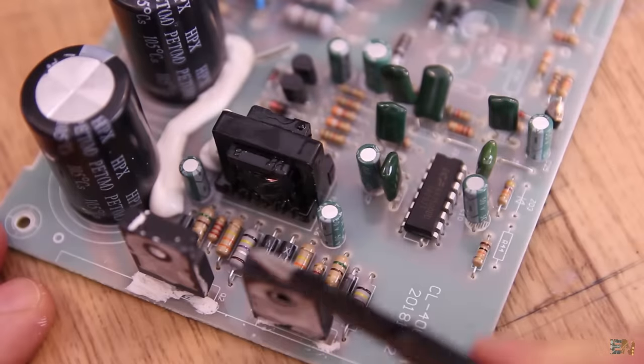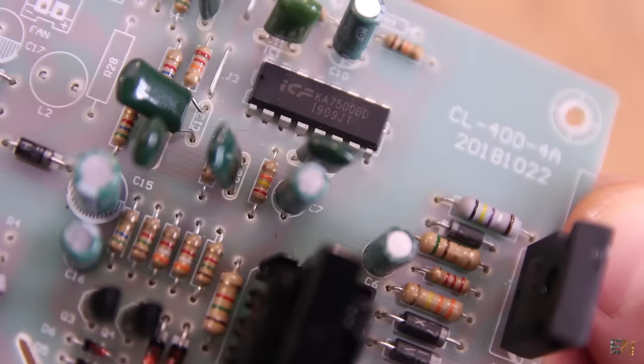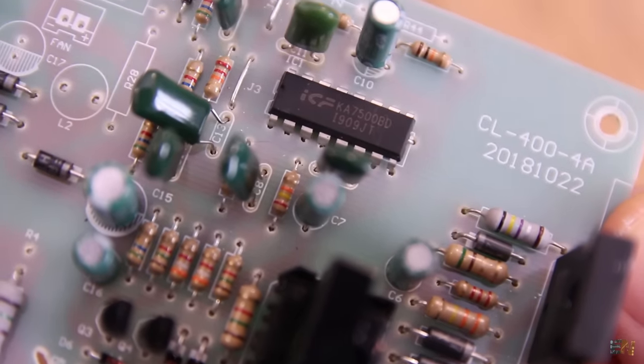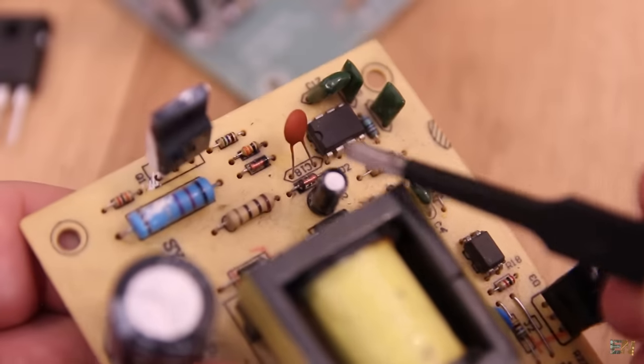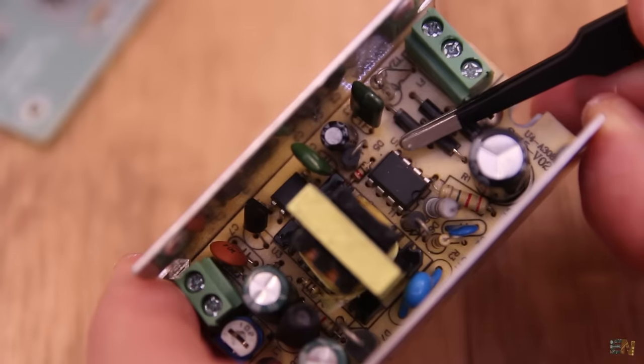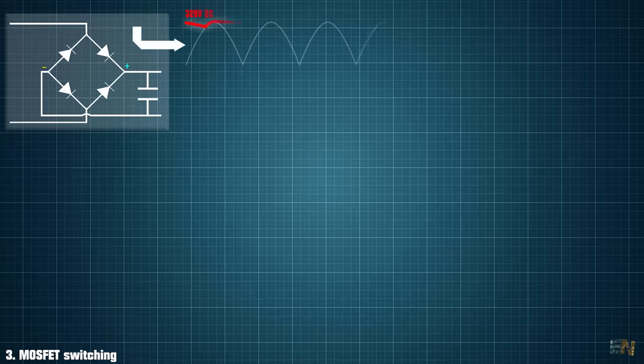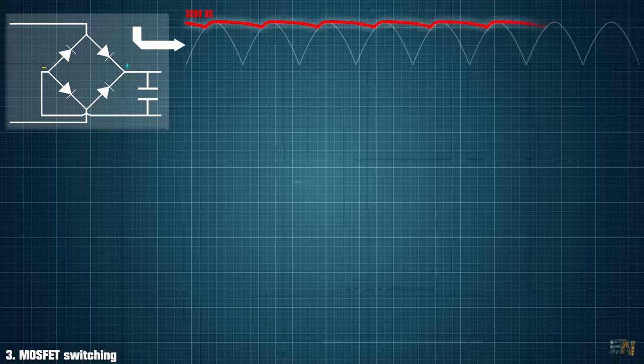The gate of this component is controlled by the PWM controller which is this IC here. On the smaller power supply we have a different controller and any other supply might have a different one. Ok, so for now, the primary filter will give us some sort of DC voltage of high value, around 320V for Europe.